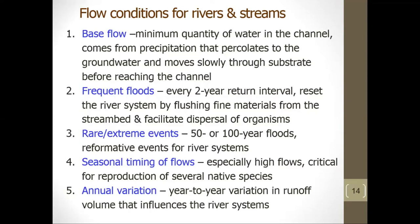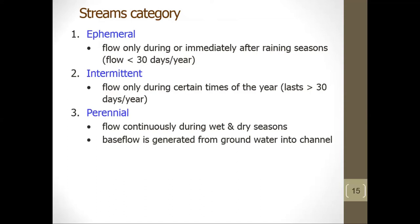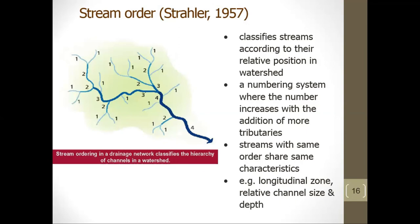There are three categories of streams: ephemeral, which flows only during or immediately after the wet season and flows less than 30 days per year; intermittent, which flows only during certain times of the year and lasts more than 30 days per year; and perennial, which flows continuously during both wet and dry seasons. Base flow is generated from groundwater into the channel.